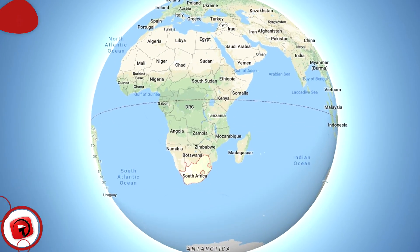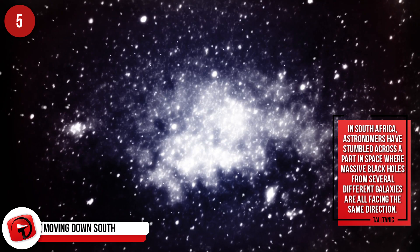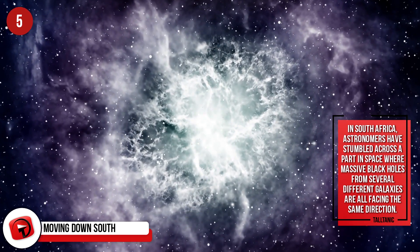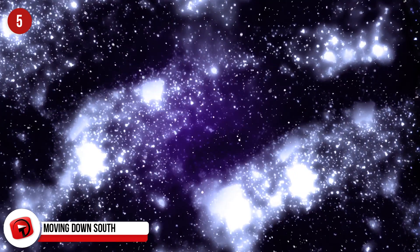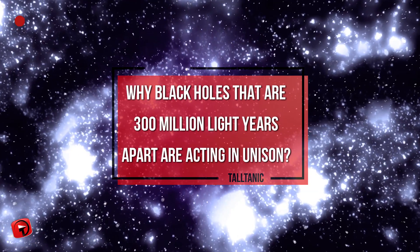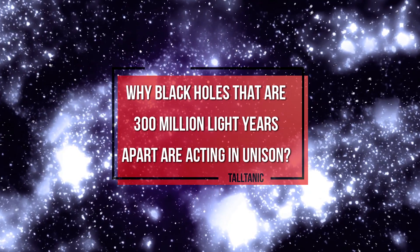Moving Down South. In South Africa, astronomers have stumbled across a part in space where massive black holes from different galaxies are all facing the same direction. Their gas emissions are getting out as if they were synchronized. Scientists are finding it hard to explain why black holes that are 300 million light years apart are acting in unison.